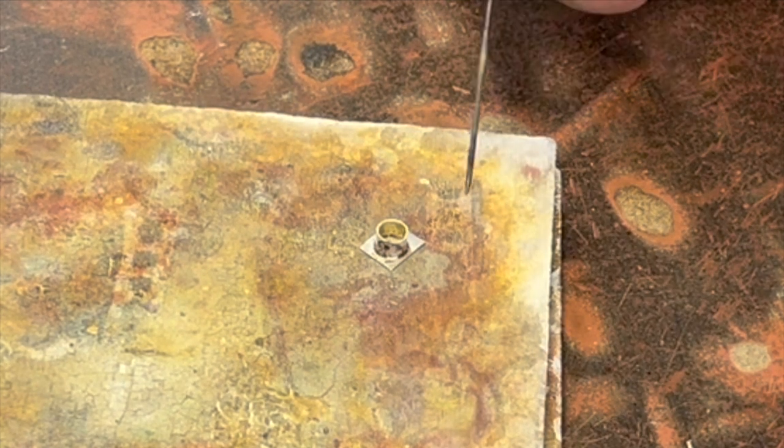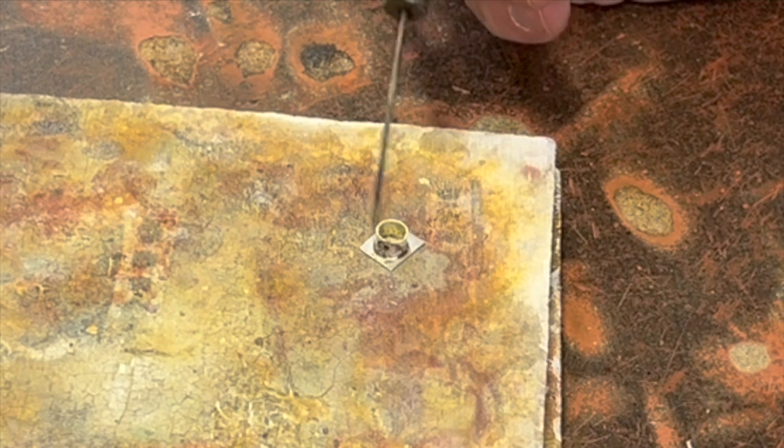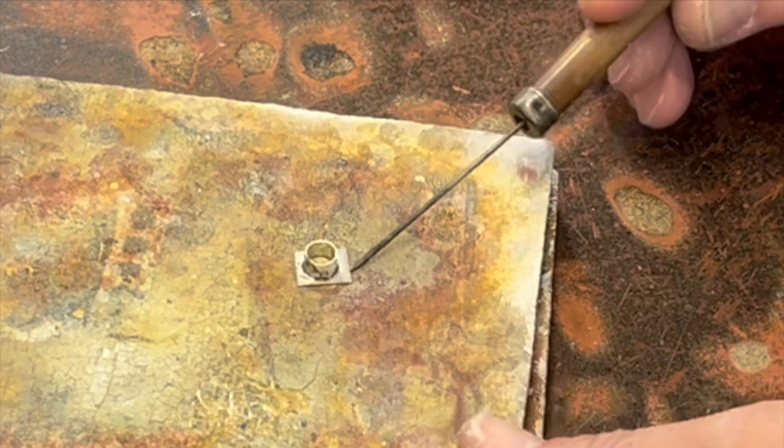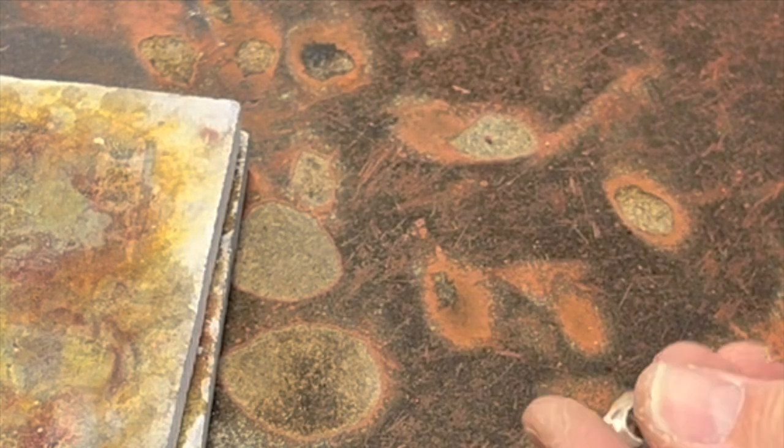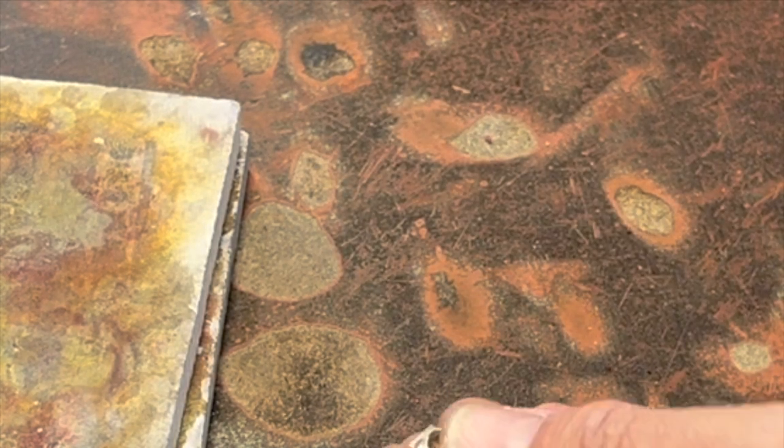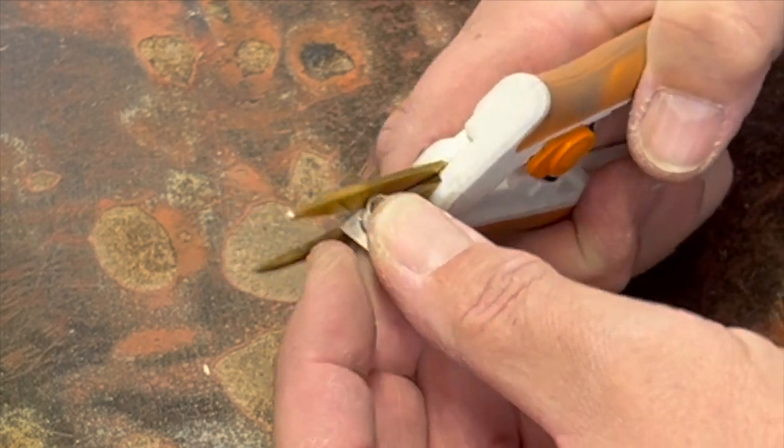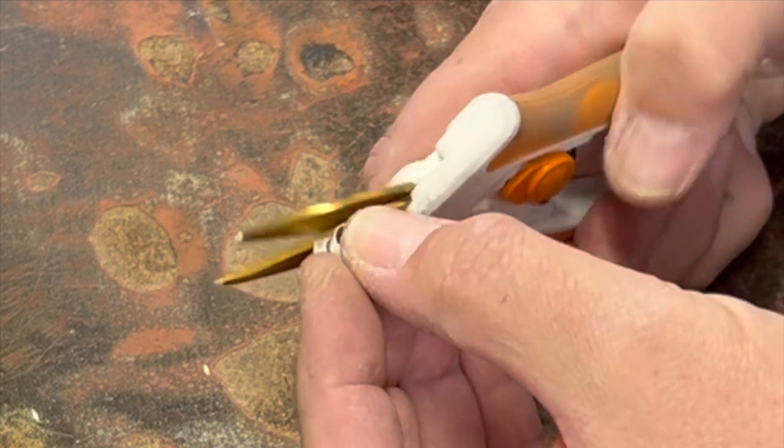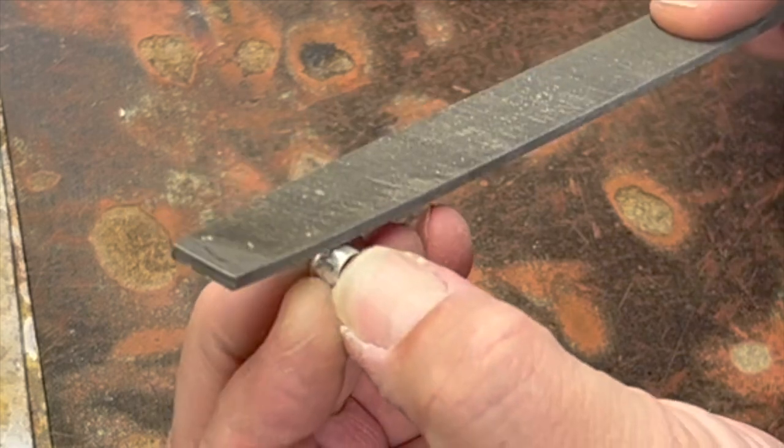Often times beginners will melt their bezels because they're failing to get the bottom sheet hot enough before they overheat the top part. If you've ever had problems with melting bezels and you're a beginner, that's probably what's going on. You just need to focus on getting the sheet hot a little bit more than the top part. For this one, I'm not going to solder anything to the sheet on the side, so I'm just going to trim it off. Now I'm just going to file this flush.